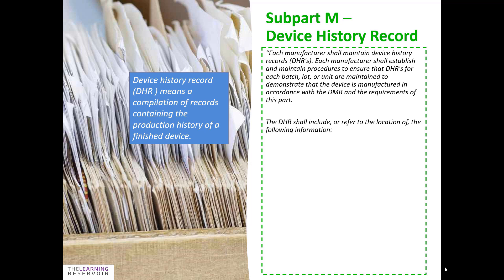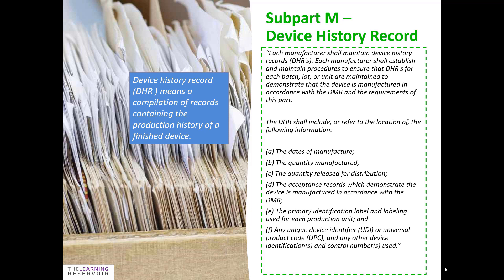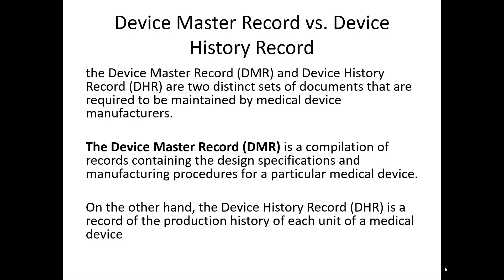The device history record shall include or refer to the location of the following information: the dates of manufacture, the quantity manufactured, the quantity released for distribution, the acceptance records which demonstrate the device is manufactured in accordance with the DMR, the primary identification label and labeling used for each production unit, any unique device identifier or universal product code, and any other device identification and control number used. So all those documents describe how your device was manufactured.